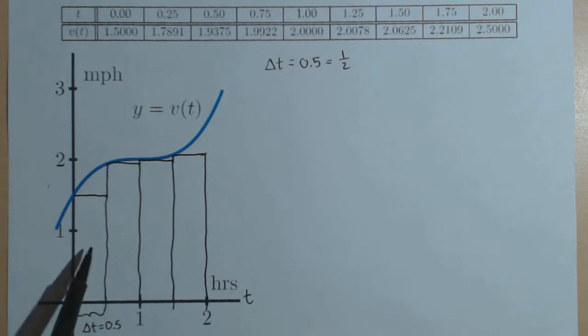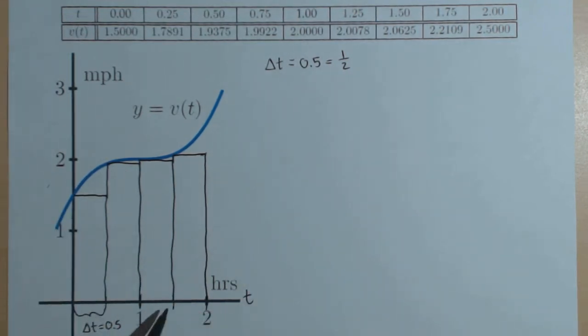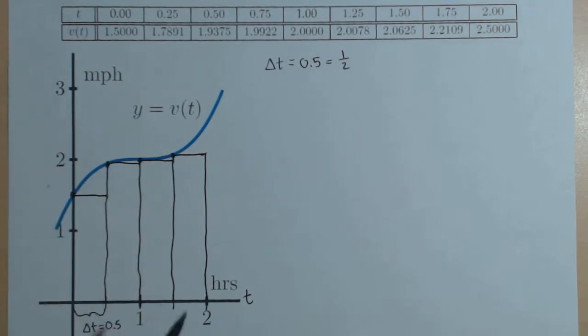I need to figure out the area of each of these rectangles. Notice each of them has a width of one half. What I really need are the function values at these points. Notice that these are the left-hand corners of the rectangle. This is known as a left-hand rule or left-hand sum.